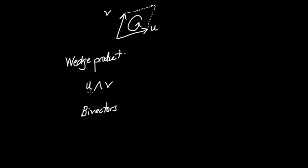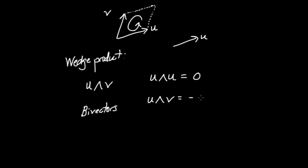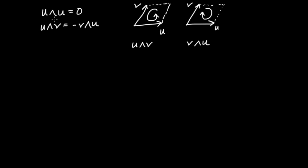One of the most important properties of the wedge product is that U wedged with itself is zero — because if both sides of the parallelogram are the same vector, the enclosed area is zero. Another property: U∧V equals minus V∧U. The wedge product is anti-commutative, meaning when you switch the order of the two vectors, you must insert a minus sign. This is similar to the cross product, which also gives zero when crossed with itself and is anti-commutative.